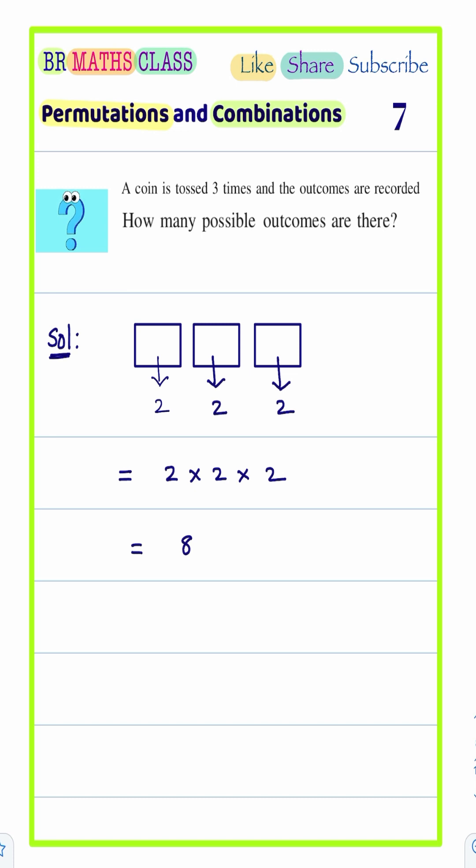So, what are those eight means? See, when a coin is tossed three times, there is a chance, all three heads, and two heads, one tile, one head, two tiles. Like this, we can get...